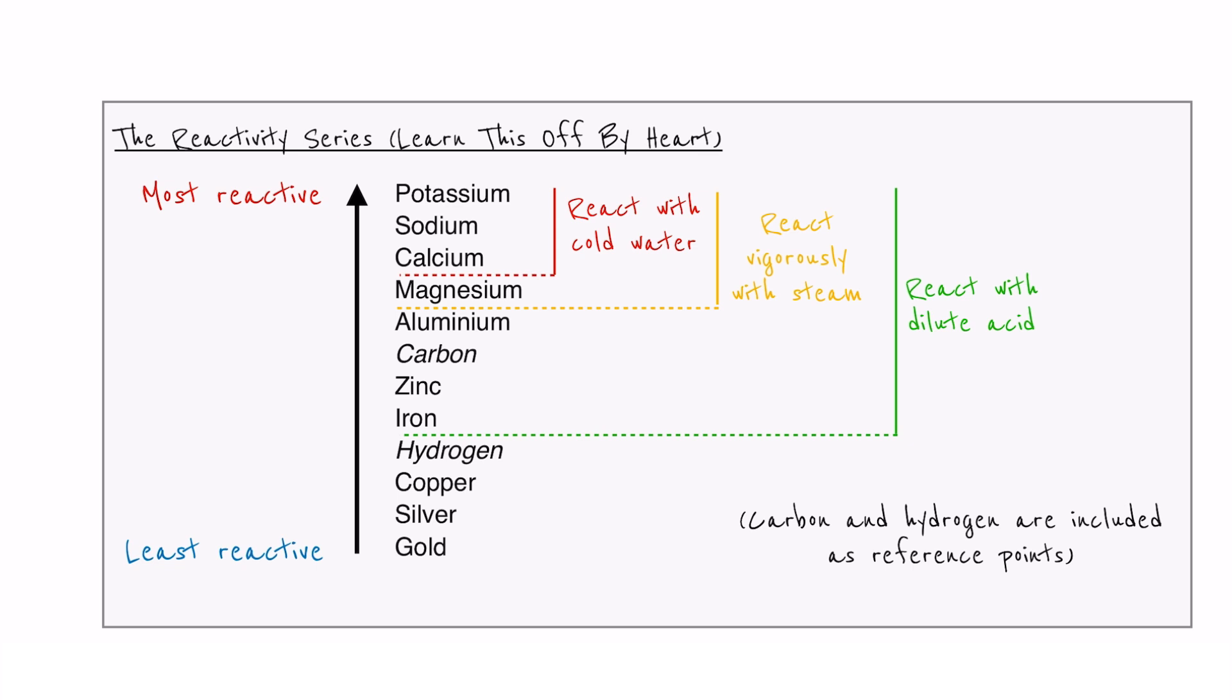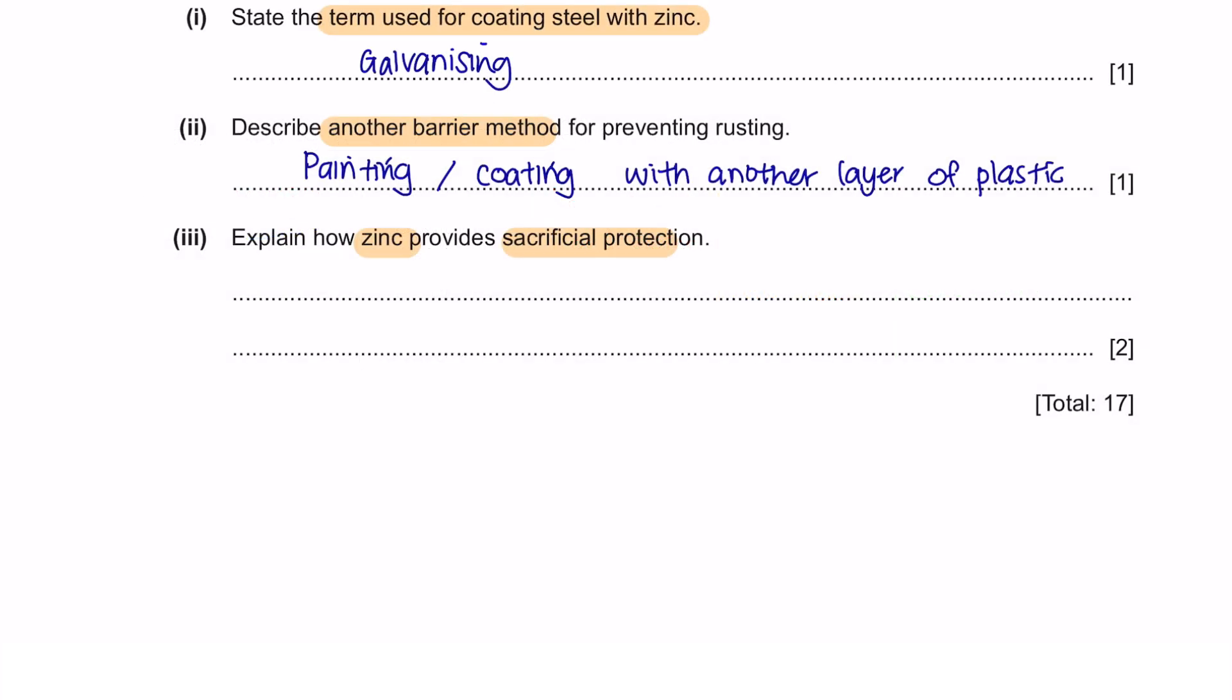Next, explain how zinc provides sacrificial protection. Under your reactivity series, you will see that zinc is placed above iron, meaning that zinc is more reactive. So instead of the iron being oxidized, the zinc will be oxidized, preventing the iron from rusting. For your first mark, you can mention that zinc is more reactive than iron. Therefore, zinc oxidizes instead of iron.